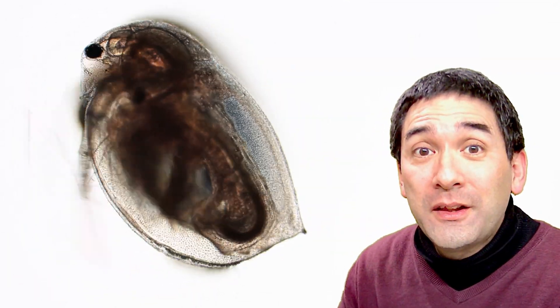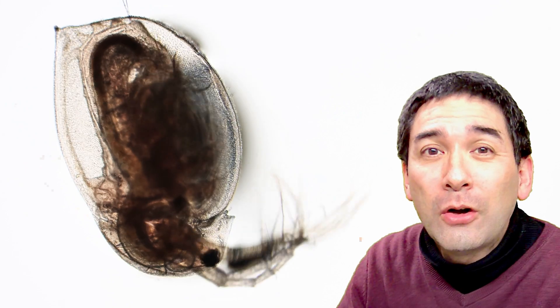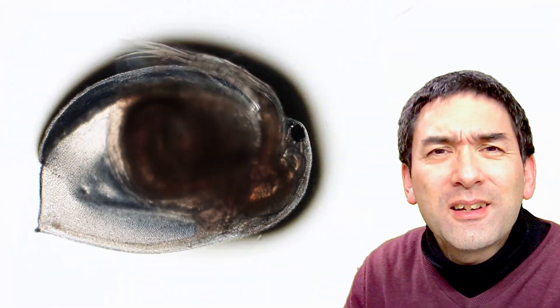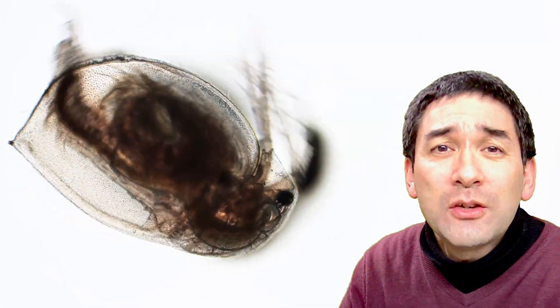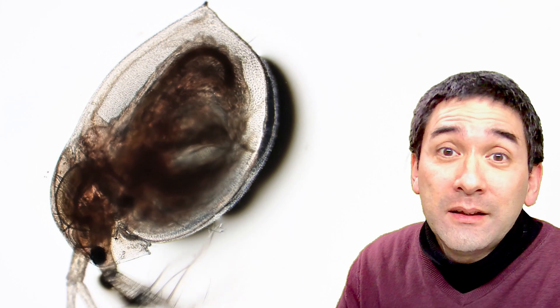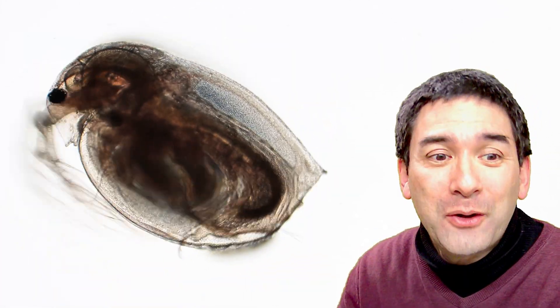So first of all, these little Daphnia are basically tiny, probably maybe two or three millimeters large. They're not insects, they are crustaceans, and this means they're related to the crabs and to the shrimp, and they can be bought as fish food, which is basically where I got them from.